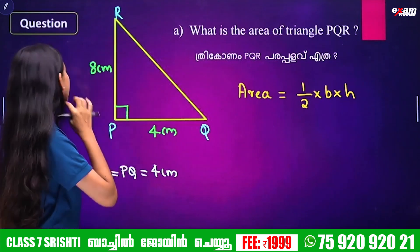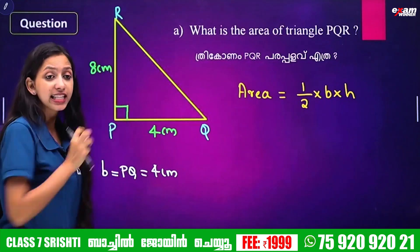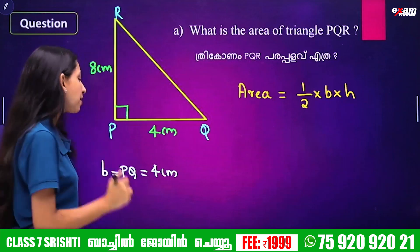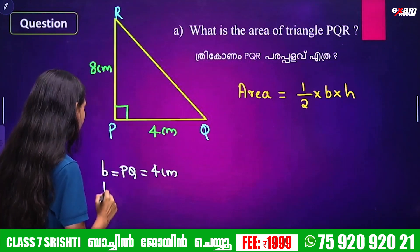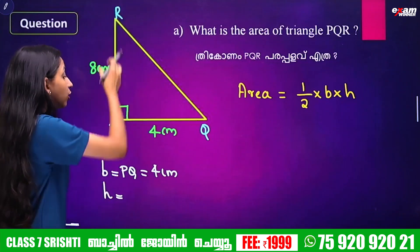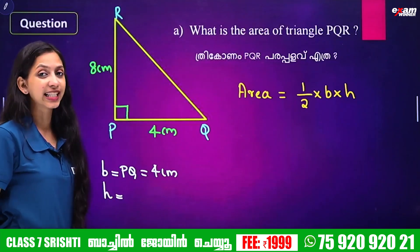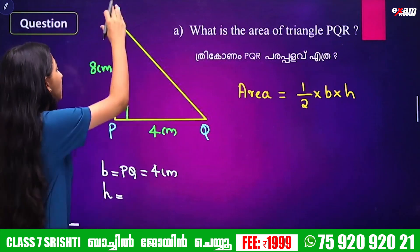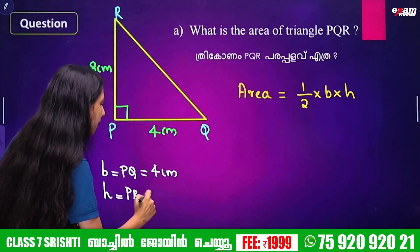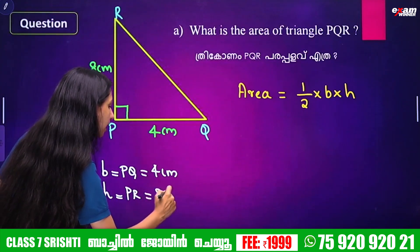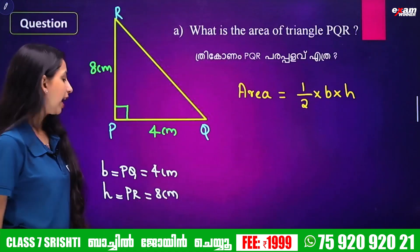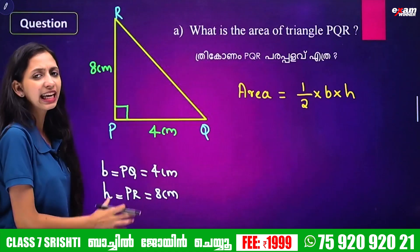Now, what about the height? We use the right angle to find the height. The height is the perpendicular side. The height is 8 cm. These are our height and base values.